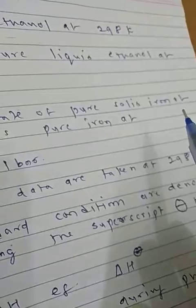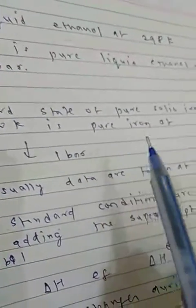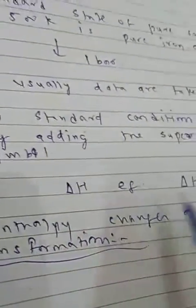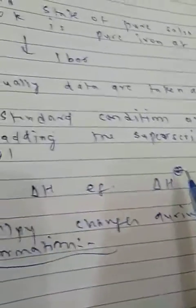The standard state of a substance at a specified temperature is its pure form at 1 bar. For example, liquid ethanol at 298 Kelvin is pure liquid ethanol at 1 bar. Standard state of pure solid iron at 500 Kelvin is pure iron at 1 bar. Usually data are taken at 298 Kelvin. Standard conditions are denoted by adding a superscript circle to the symbol delta H.